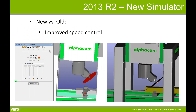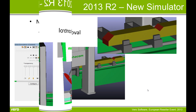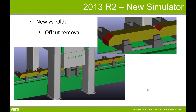The much improved speed control with the new simulator allows you to run it faster, with more reliable collision detection. There is also an option for offcut removal, giving a more realistic simulation of the machining process.